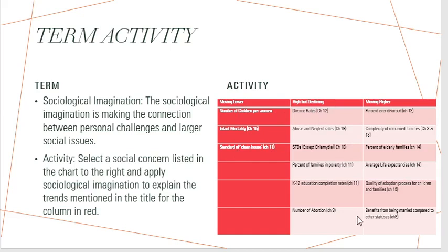If you find yourself in any of these categories, that is the micro level of analysis connected with the macro level of analysis, which helps you understand these trends through a sociological imagination perspective. Sociological imagination is when one can connect their own life with larger social trends. Let's select a social concern from this chart and apply sociological imagination to explain the trends listed in the red columns.